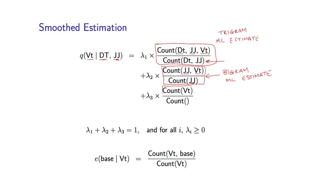And finally, I have the unigram ML estimate. On the numerator is the number of times I've seen the tag vt. And on the denominator is the total number of tags I've seen in my entire training corpus.